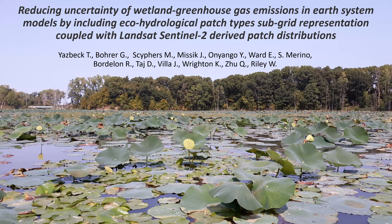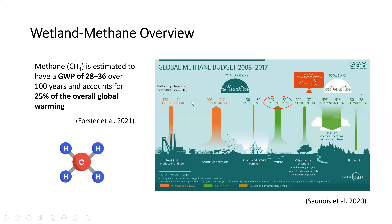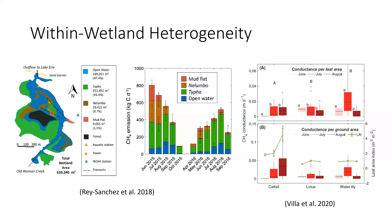Wetlands are the highest biogenic emitter of methane globally, but as you can see in this global study, methane emissions from wetlands are very uncertain. There is high uncertainty in estimating the emissions, sinks, and sources of methane within the wetland. This is largely due to the within-wetland heterogeneity responsible for methane dynamics — within a wetland there are multiple hydrological patches with different vegetation: open water, mudflat, and different processes differing by orders of magnitude between these ecohydrological patches.